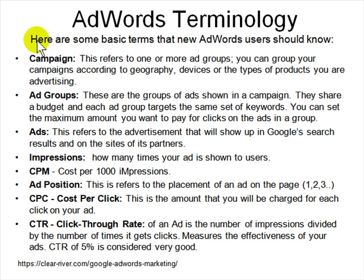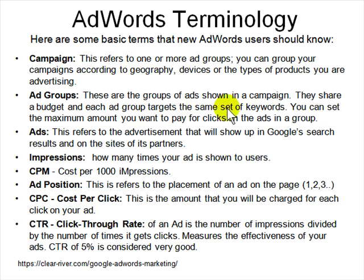More AdWords terminology: a Campaign consists of one or more ad groups and can be organized by geography, devices, or type of products being advertised. Inside a campaign are ad groups — groups of ads that share a budget and target the same set of keywords. You can specify how much you want to spend per click on each ad in an ad group. Impressions refer to how many times your ad was shown to people — every time someone sees your ad, it's an impression. Because the cost per impression is so low, it's measured as CPM — cost per thousand impressions.